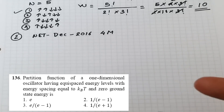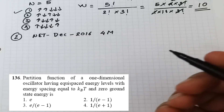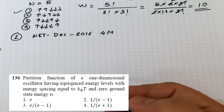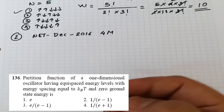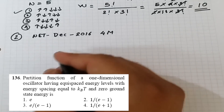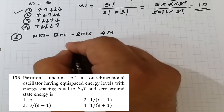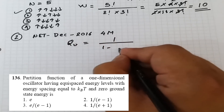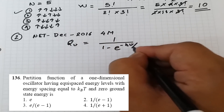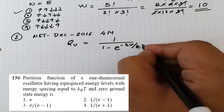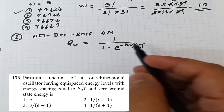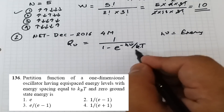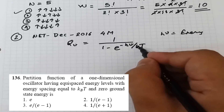Whenever a particle performs one-dimensional oscillation, it is a vibrational partition function. The expression for vibrational partition function is: q_v = 1 / (1 − e^(−hν/kT)). Here hν is the energy of the system, k_B is Boltzmann's constant, and T is temperature.